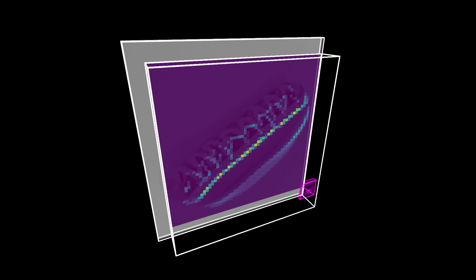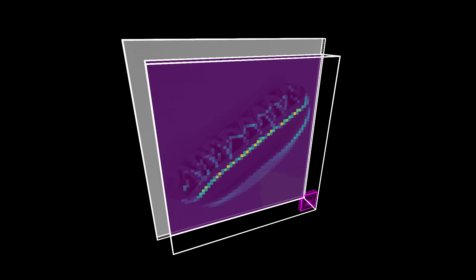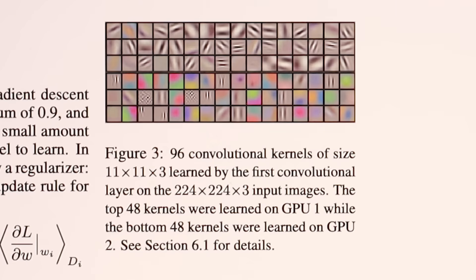Here, it's helpful to think of the dot product as a similarity score. The more similar a given patch of the image and kernel are, the higher the resulting dot product will be. AlexNet uses 96 individual kernels in its first layer, each of dimension 11 by 11 by 3, so conveniently we can visualize them as little RGB images.